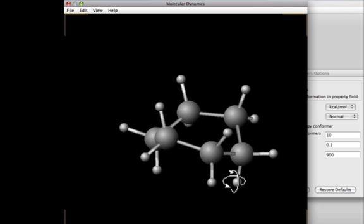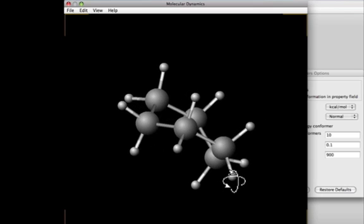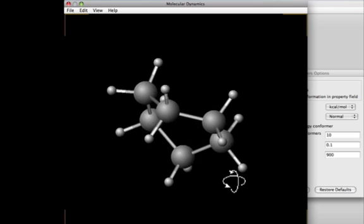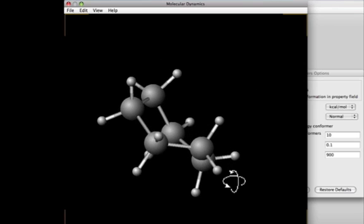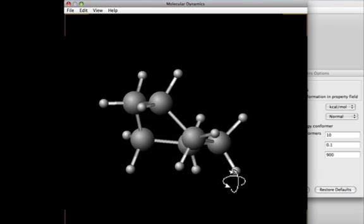If we were to perform this molecular dynamics simulation over a much longer period of time, we would not only observe it relax back into the chair form, but we would also observe the chair undergo a process known as ring flipping.